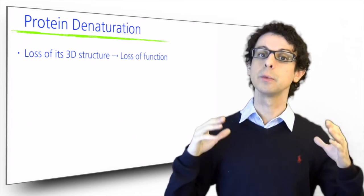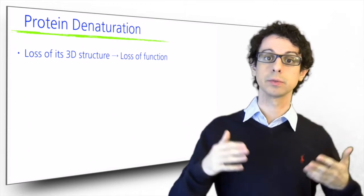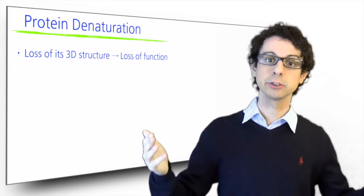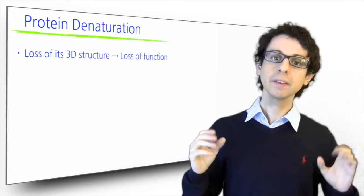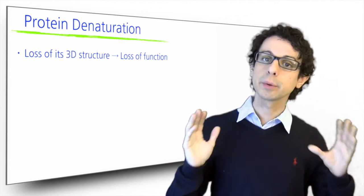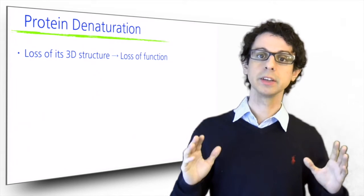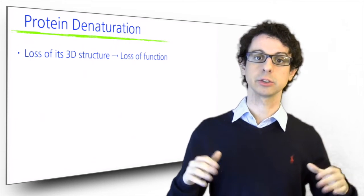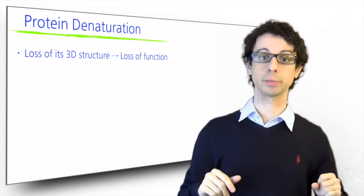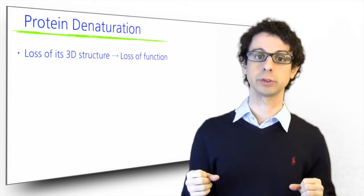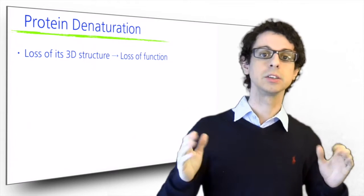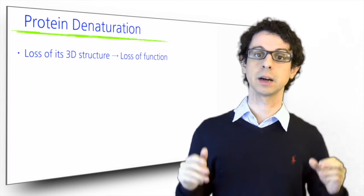Protein denaturation can be something we do not want — for example, for the proteins in our body, we don't want our insulin to be denatured because it will lose its function. But in other circumstances, protein denaturation is something we actually want. Think protein digestion: our goal with digestion is not preserving the function of proteins, we just want the pieces. One of the goals of protein digestion is precisely protein denaturation, because unfolding the proteins makes it easier to break them down to get the single amino acids that we can then use.